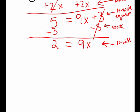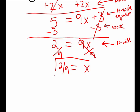For the last step, I want to isolate x, so I divide both sides by 9. I had 9 multiplied to x — to get it away from x, I needed to divide it away. I do it on both sides, leaving x on the right side and leaving 2/9 on the left side. So the solution is x equals 2/9.